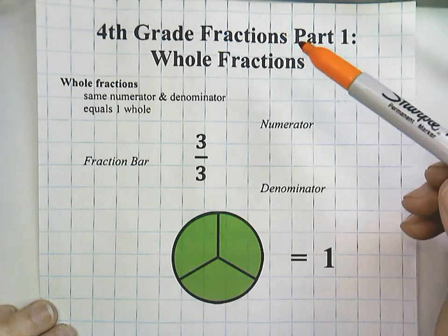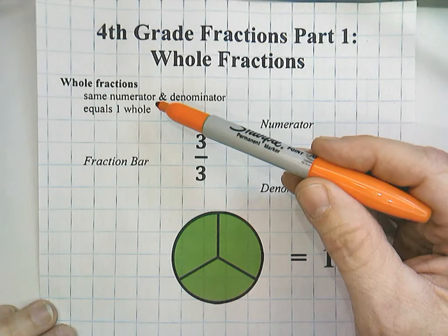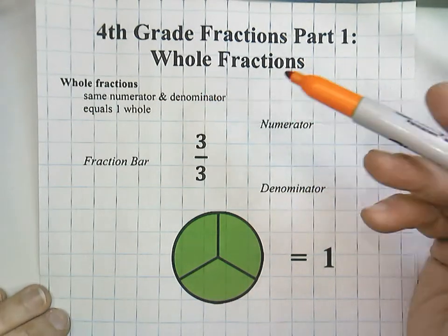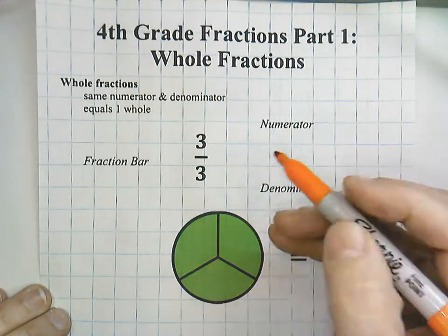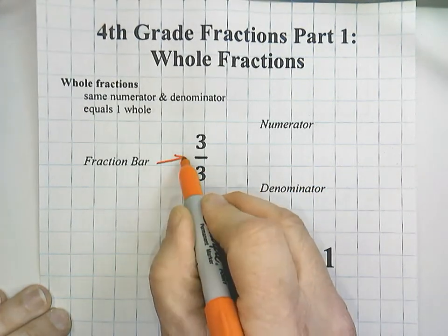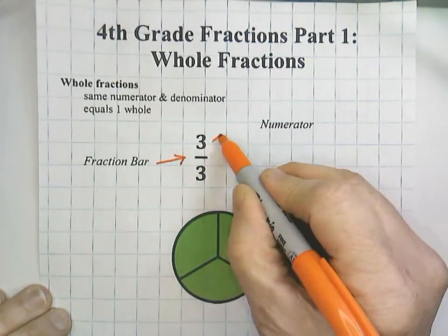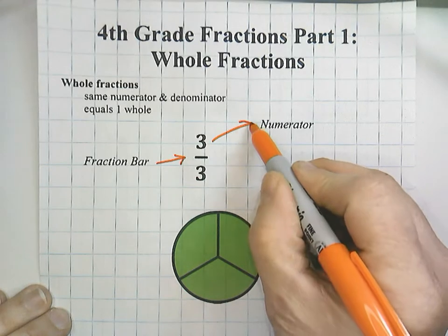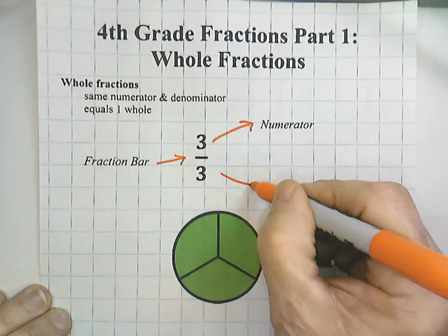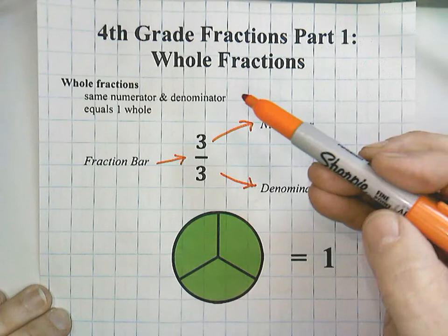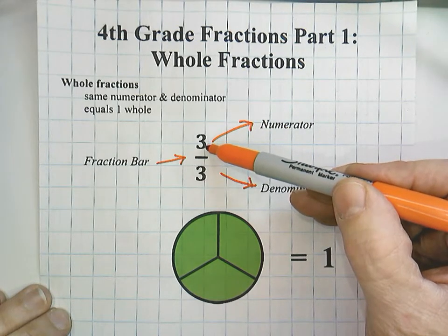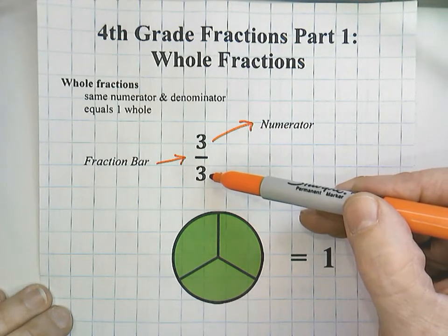Whole fractions are fractions that have the same numerator and the same denominator. You remember that fractions have three parts: we have the fraction bar, the top number is called the numerator, and the bottom number is the denominator. A whole fraction has the same numerator and the same denominator.